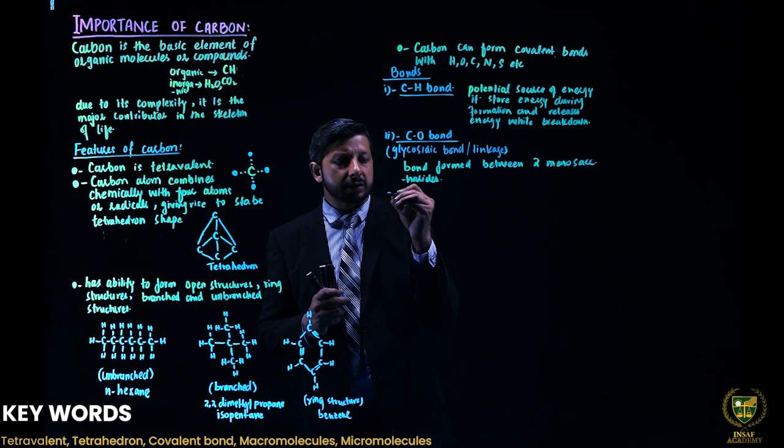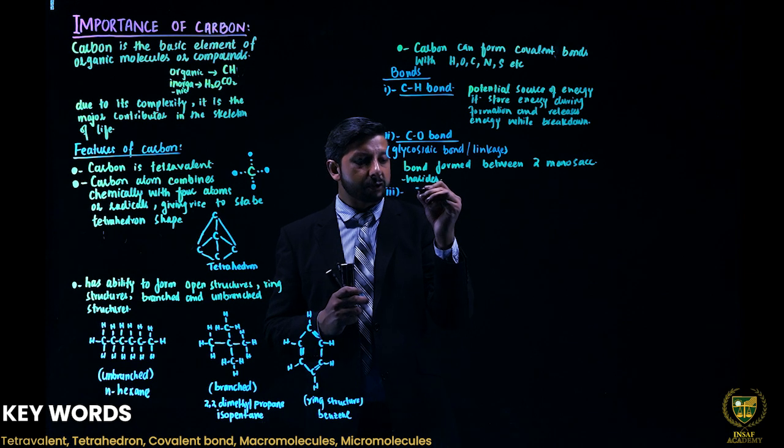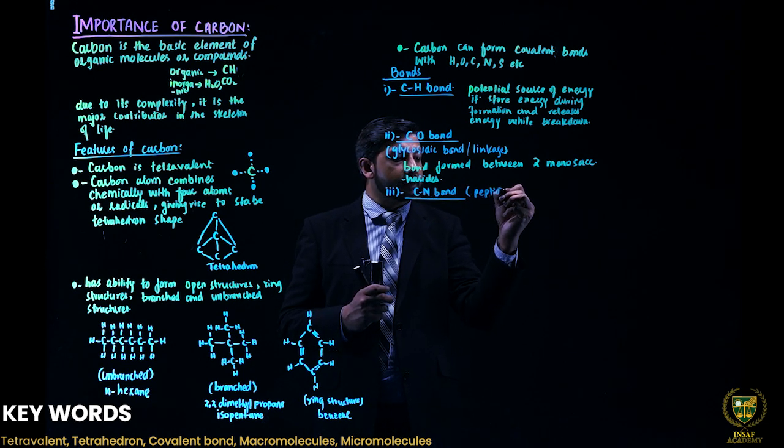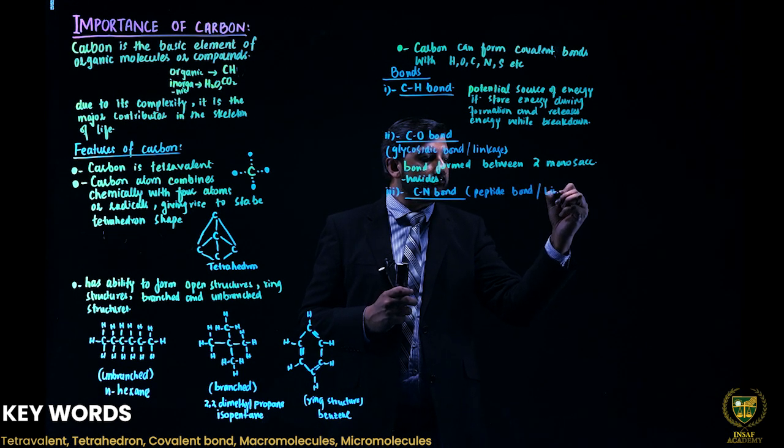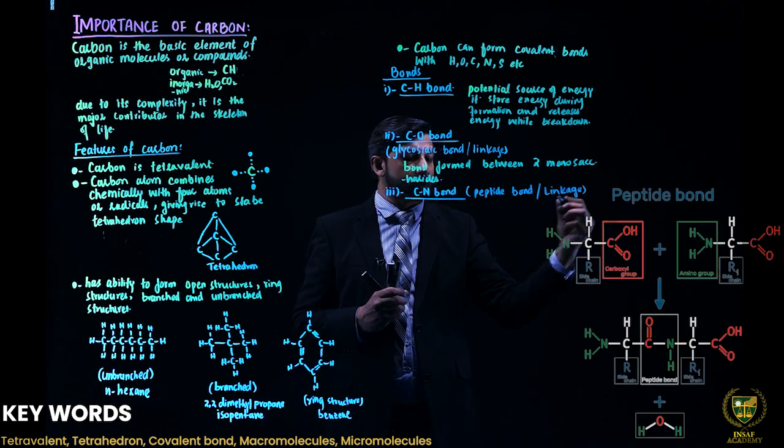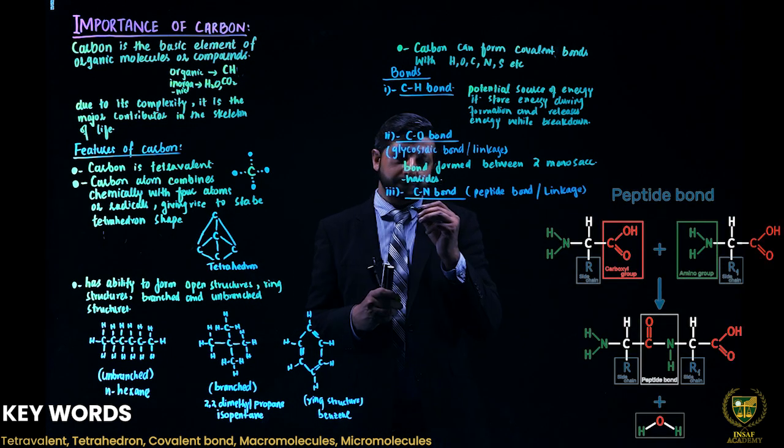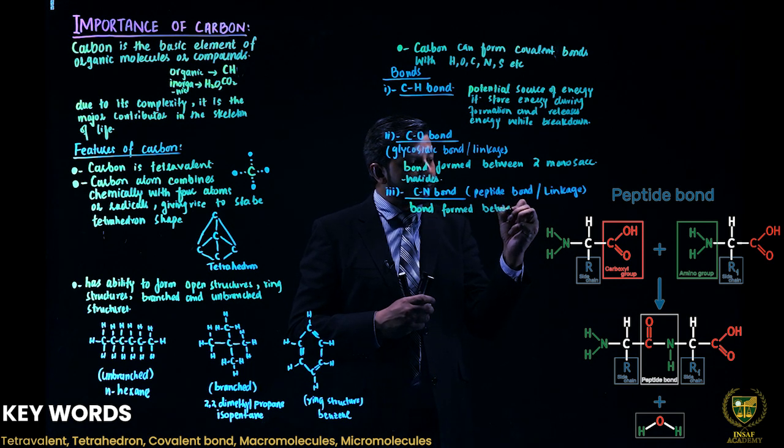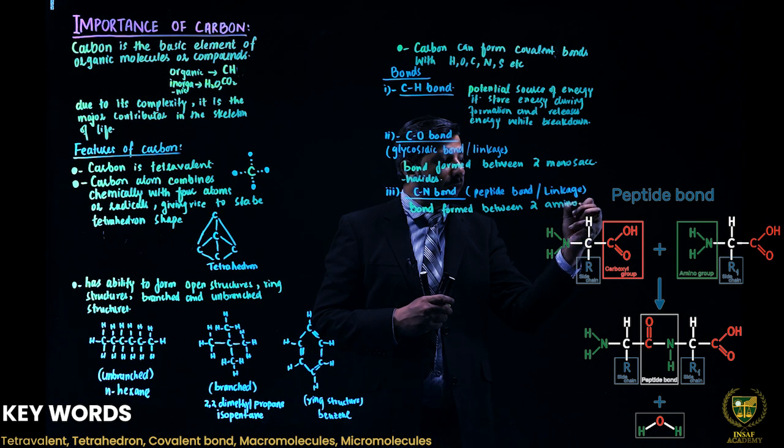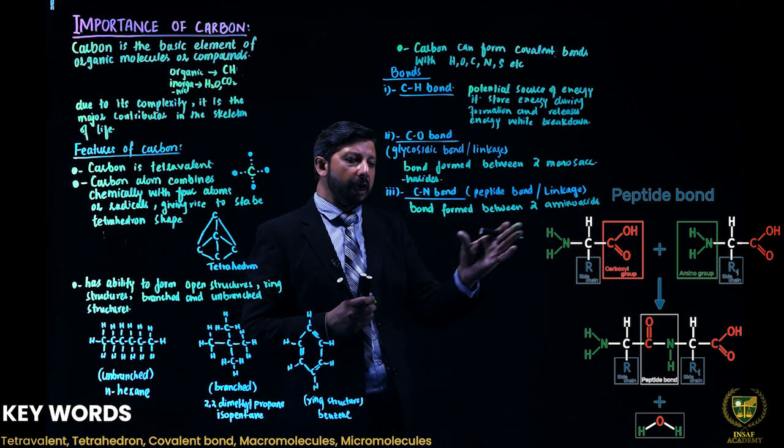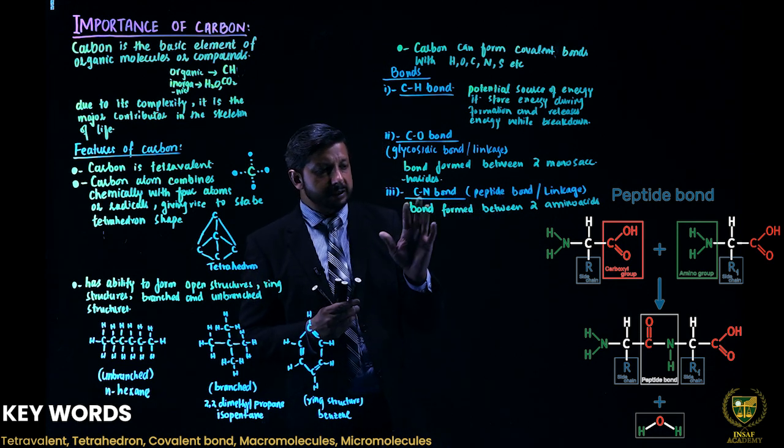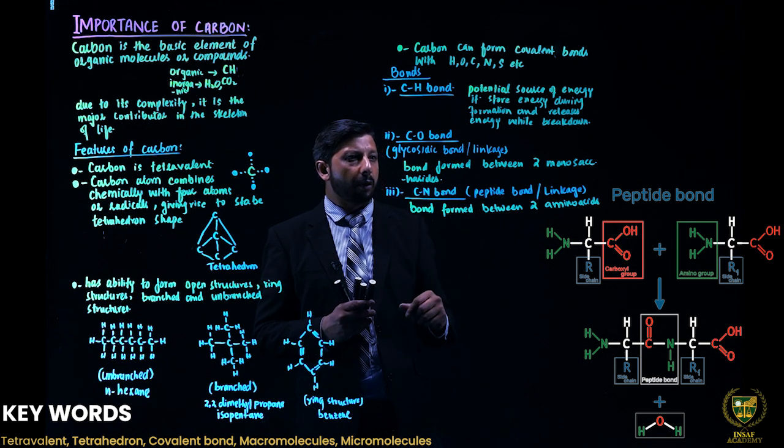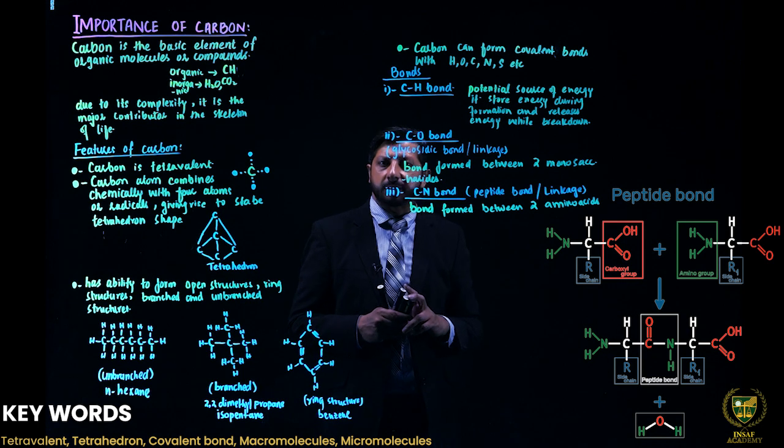Third, carbon also forms the bond with nitrogen, called carbon-nitrogen bond, or it is also called the peptide bond or peptide linkage. It is a covalent bond formed between two amino acids. The bond formed between two amino acids is called the peptide bond and it is present between carbon and nitrogen. Inshallah, in the portion of proteins we will discuss it in detail. These are important regarding short questions.